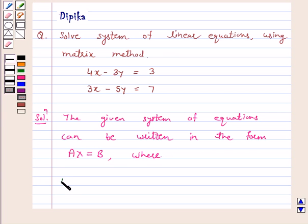A is equal to 4 minus 3, 3 minus 5, X is equal to x, y, and B is equal to 3, 7.